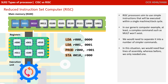With RISC processors, the aim is to use simple instructions which will be executed within a single machine or clock cycle. In our generic computer example, the complex command such as 'mult' doesn't exist. We would need to separate it into a number of simpler commands — in this situation, four lines of assembly: two for loading the different contents of memory, one for providing the product, and another to store the result back out. Whereas with the CISC architecture, we had a single low level command that performed all of that.